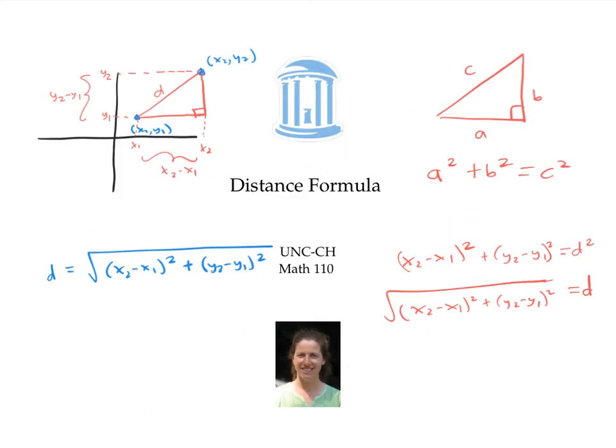In this video, we used the distance formula to find the distance between two points. When writing down the distance formula, sometimes students forget whether this is a plus or a minus. One way to remember is to think that the distance formula comes from the Pythagorean theorem. That's why there's a plus in here, and then a minus in here because we're finding the difference between the coordinates to find the lengths of the sides.